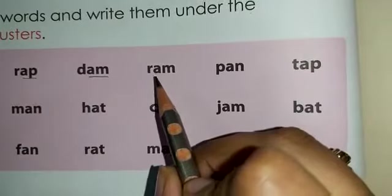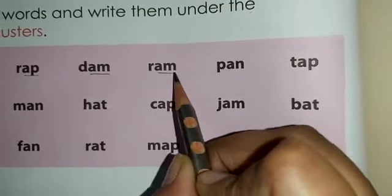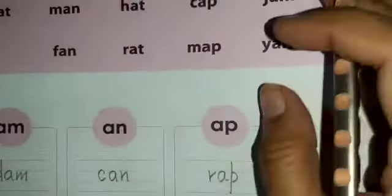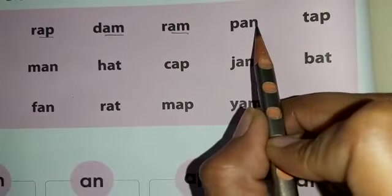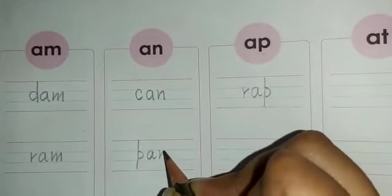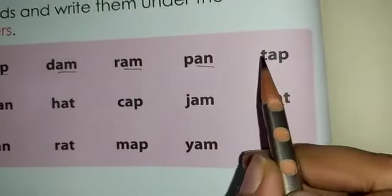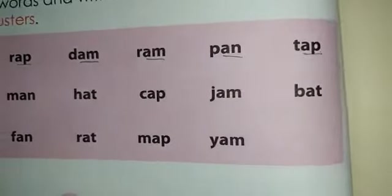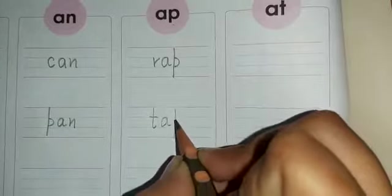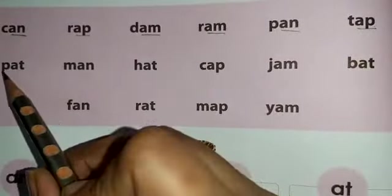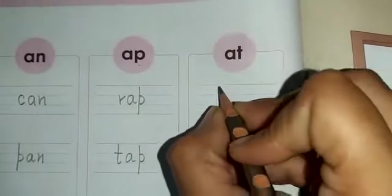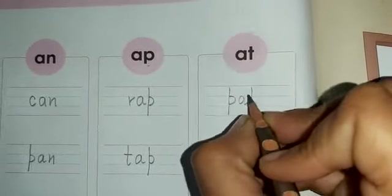Now the next one is ram. R-A-M. This is again an AM cluster word, so we will write this down here. Ram. Now the next one: P-A-N, pan. This is an AN cluster word, so we will write this down under AN. Pan. Now the next one: T-A-P, tap. This is an AP cluster word, so we will write this down under AP. Tap. Now the next one: P-A-T, pat. This is an AT cluster word, so we will write this down under AT. Pat.